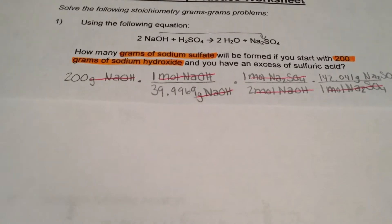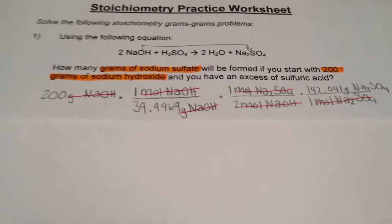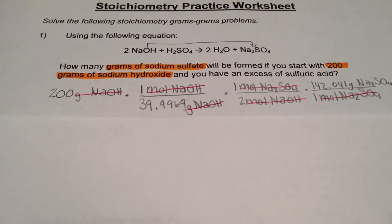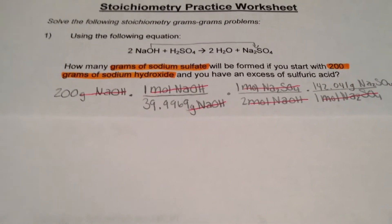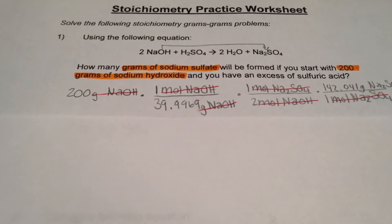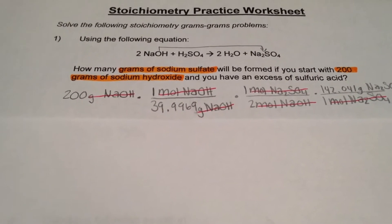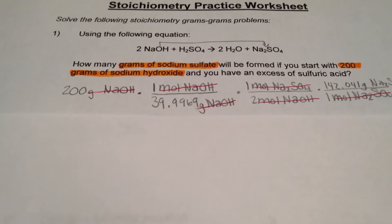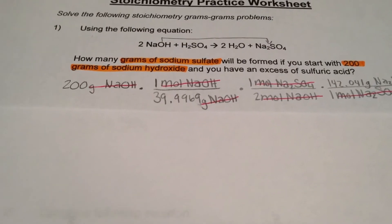The next step is setting up the equation. What we are given is 200 grams of sodium hydroxide. Next, we have to convert sodium hydroxide into moles. We take the molar mass of sodium hydroxide. That goes on the bottom so the grams can cancel out and one mole goes on the top.